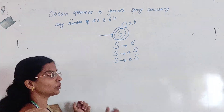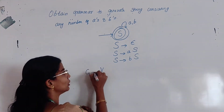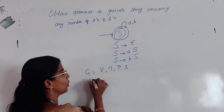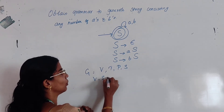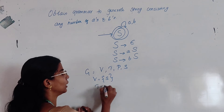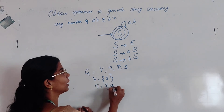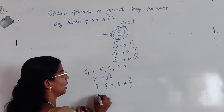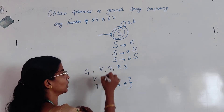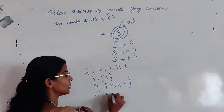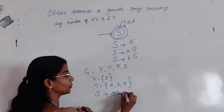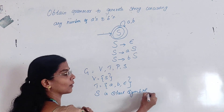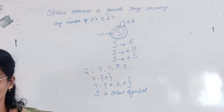Now, G is equal to (V, T, P, S). The variables are only S. The terminals are A and B. And the productions are all those productions. S is the start symbol.